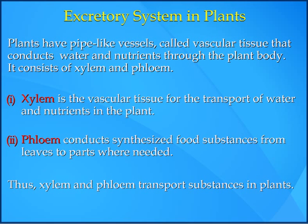Excretory system in plants. Plants have pipe-like vessels called vascular tissue that conducts water and nutrients through the plant body. 1. Xylem is the vascular tissue for the transport of water and nutrients in the plant. 2. Phloem conducts synthesized food substances from leaves to parts where needed. Thus, xylem and phloem transport substances in plants.